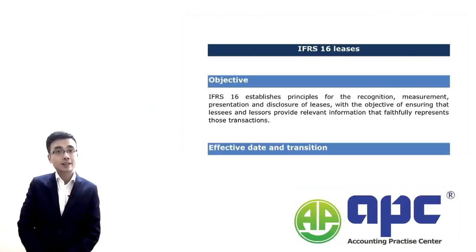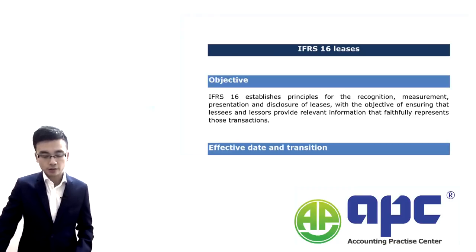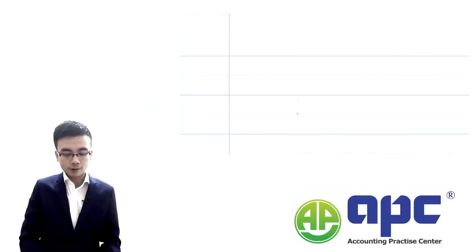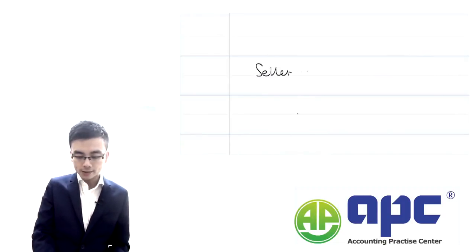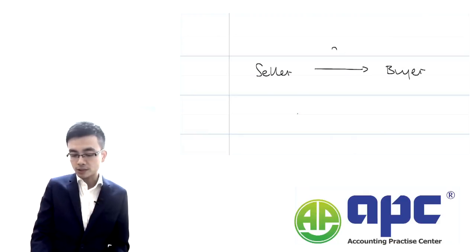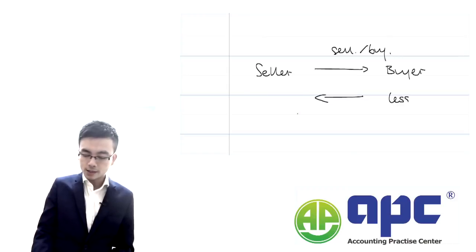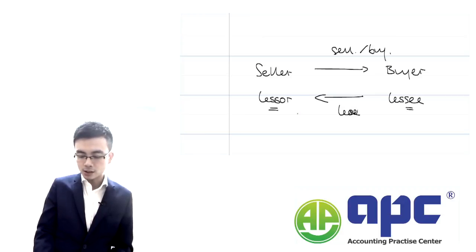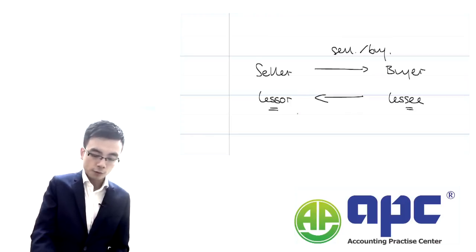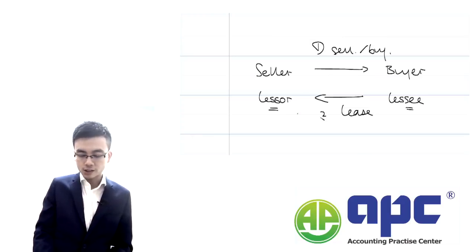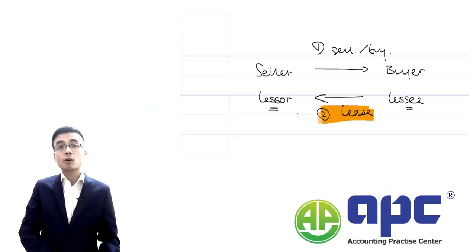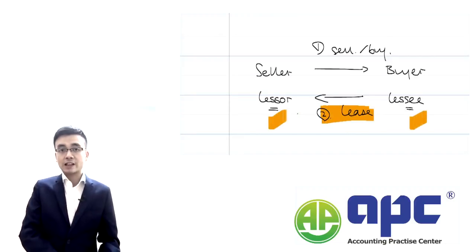Welcome to the section for leases according to IFRS 16. If you want to have an asset, you've got two choices: you can buy it from a seller, or you can lease the asset. If you lease it, you are the lessee and it is the lessor who leases the asset to you. We'll focus on the accounting treatment for this transaction from both the lessee's and lessor's point of view.